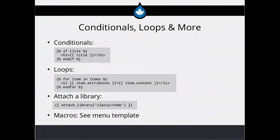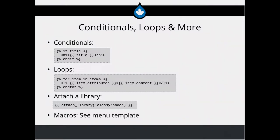Conditionals and loops: you can do simple conditionals — if there's a title, print the title — or more complicated things with ands and ors. Loops are common in a field template when there are multiple items, looping through items to put them in list elements. Attributes is something many render arrays have that come out of Drupal and are rendered in the template file. Attaching libraries is an interesting part of Drupal 8 theming where you can attach a library only where needed — Classy's node template is a good example. Macros are also interesting, as seen in the menu template where it repeats itself to generate a nested menu structure.